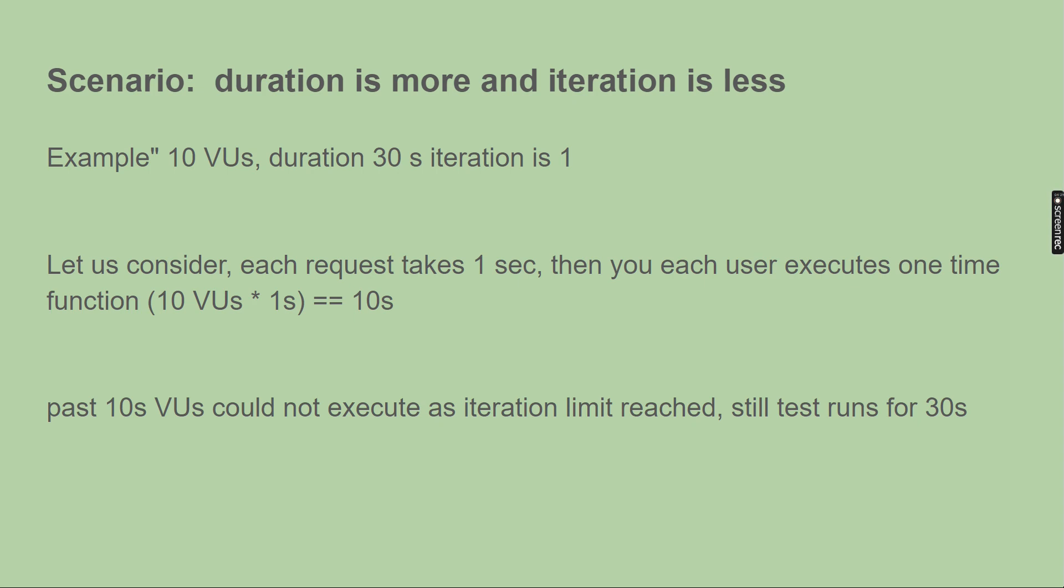Then what happens? Then 10 virtual users will be targeting the application. And since the iteration is 1, all 10 users at a time can try only once. So that means since we have only 1 second of response time or function execution time, all 10 virtual users one time went to the application and it took 10 times 1, which is 10 seconds.